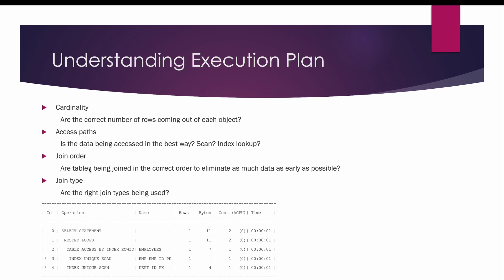Third is join order — whether the tables being joined are in the correct order so we can eliminate as much data as possible in the initial phase. For example, in this operation the join is between the employees and departments table, and since the cardinality is 1, we can safely say it has eliminated as much data as possible in the initial phase.